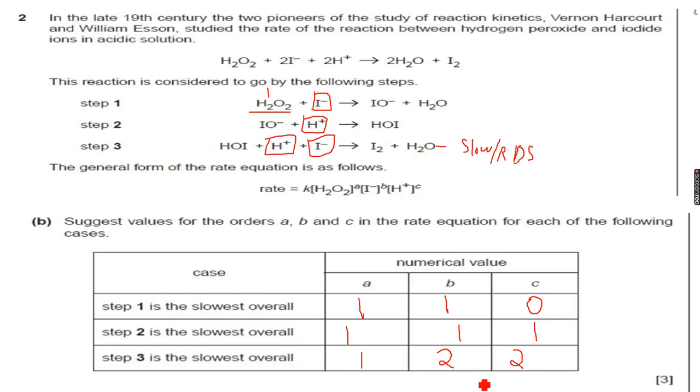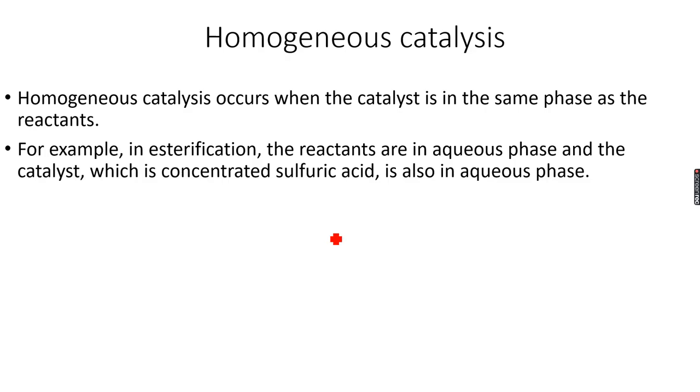So even this becomes two. Now we have successfully completed this table and now we know how to work with reaction mechanisms and rate equations together. We have completed reaction mechanisms and we will be studying catalysis for the rest of the presentation. Catalysis is basically the process in which a catalyst speeds up a reaction.